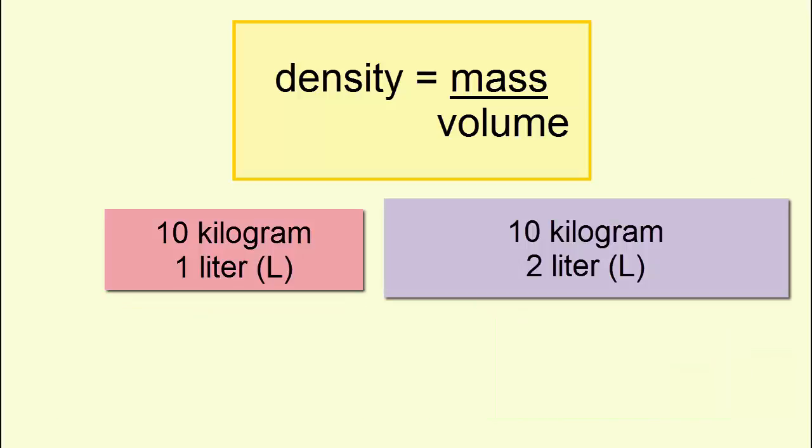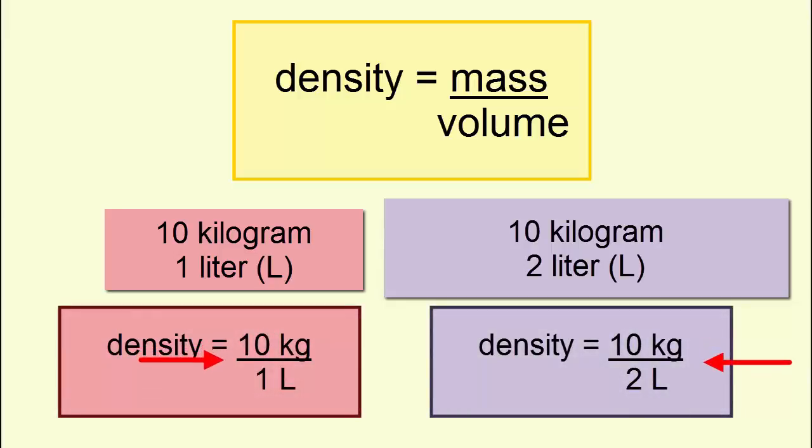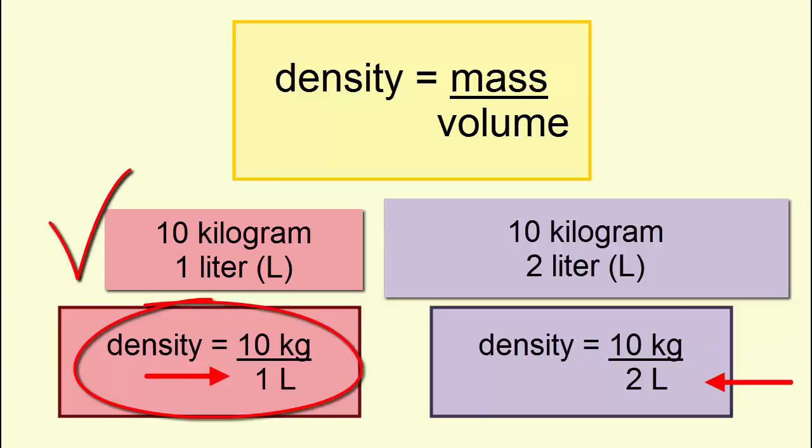Now imagine two objects of the same mass but different volumes. Same numerator, different denominators. Which is denser? The object with the smaller volume denominator is the denser one.